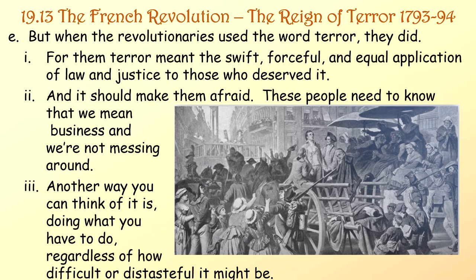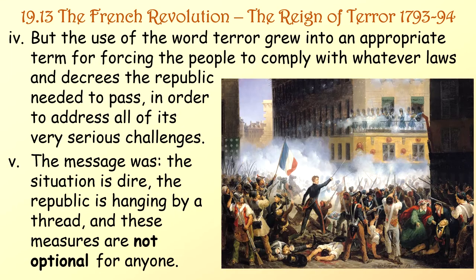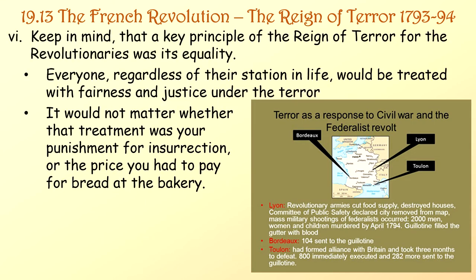For the revolutionaries, terror meant the swift, forceful, and equal application of law and justice to those who deserved it — making enemies afraid, doing what you have to do regardless of how difficult or distasteful. The use of the word terror grew into an appropriate term for forcing compliance with whatever laws and decrees the Republic needed to address its serious challenges. The message was: the situation is dire, the Republic is hanging by a thread, and these measures are not optional for anyone. A key principle of the Reign of Terror for the revolutionaries was its equality — everyone regardless of station would be treated with fairness and justice, whether that meant punishment for insurrection or a fixed price for bread.